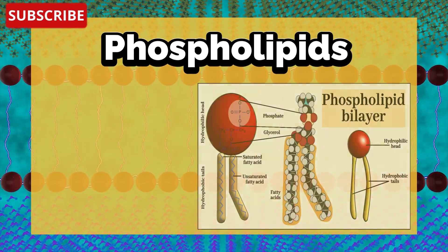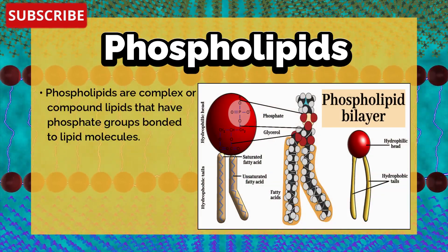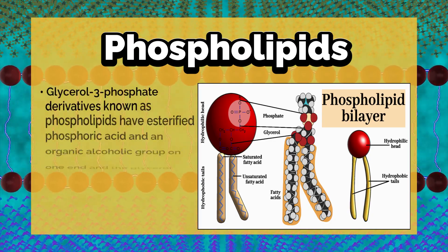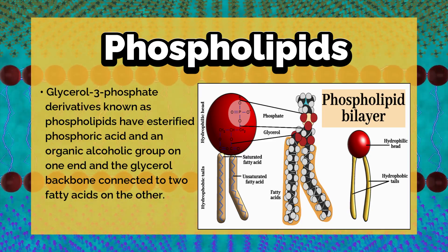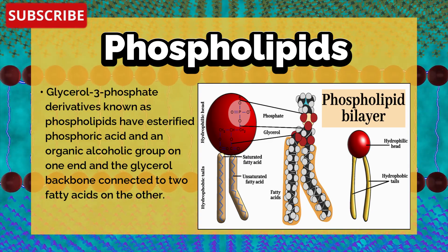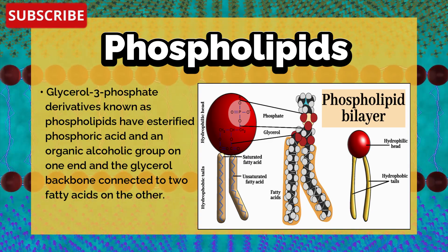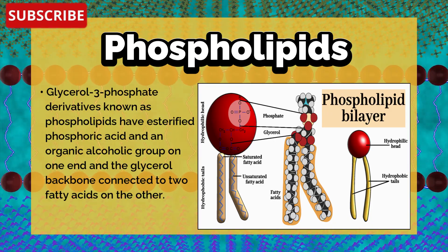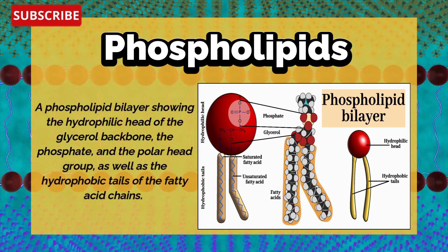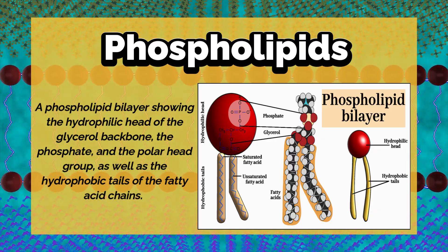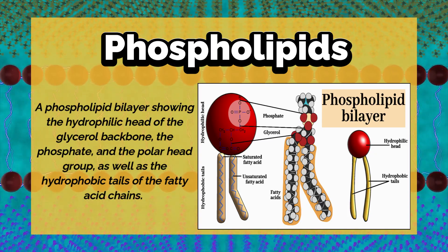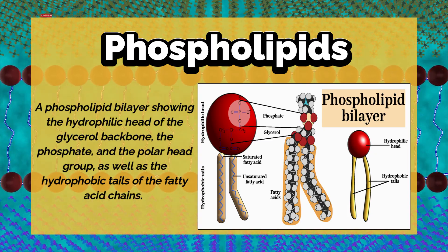Phospholipids are complex or compound lipids that have phosphate groups bonded to lipid molecules. They are glycerol-3-phosphate derivatives with esterified phosphoric acid and an organic alcohol group on one end and the glycerol backbone connected to two fatty acids on the other. A phospholipid bilayer shows the hydrophilic head of the glycerol backbone, the phosphate, and the polar head group, as well as the hydrophobic tails of the fatty acid chains.